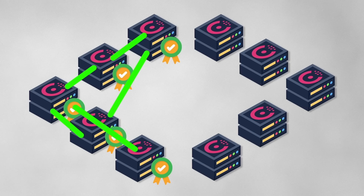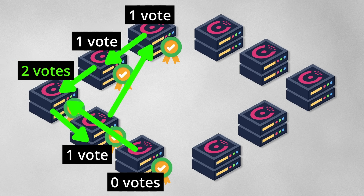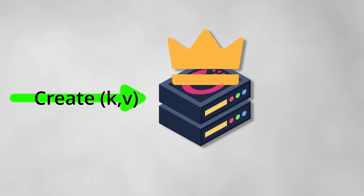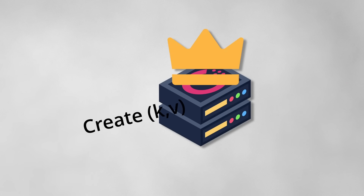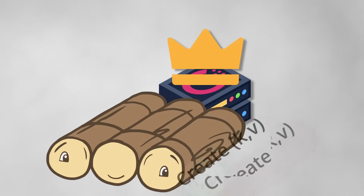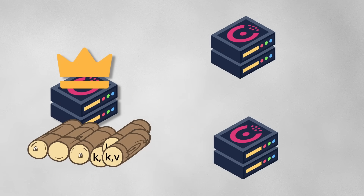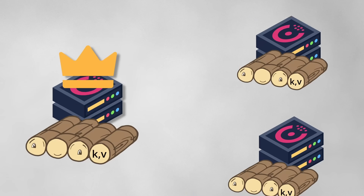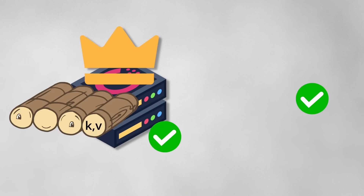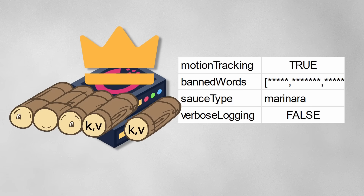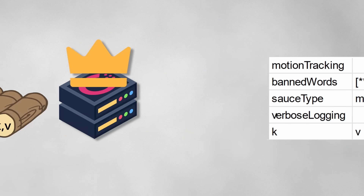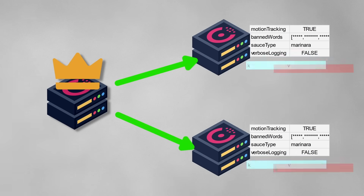In Raft, all of the voter nodes vote for a leader, which is where all state changes such as writes are directed. The leader node then receives write events, such as the item to create, and appends it to a log. This entry replicates to the other nodes, which will append it to their logs and return success. After a majority of nodes respond successfully, the leader will commit the entry and apply the change to the underlying data store, informing the followers to do so accordingly.